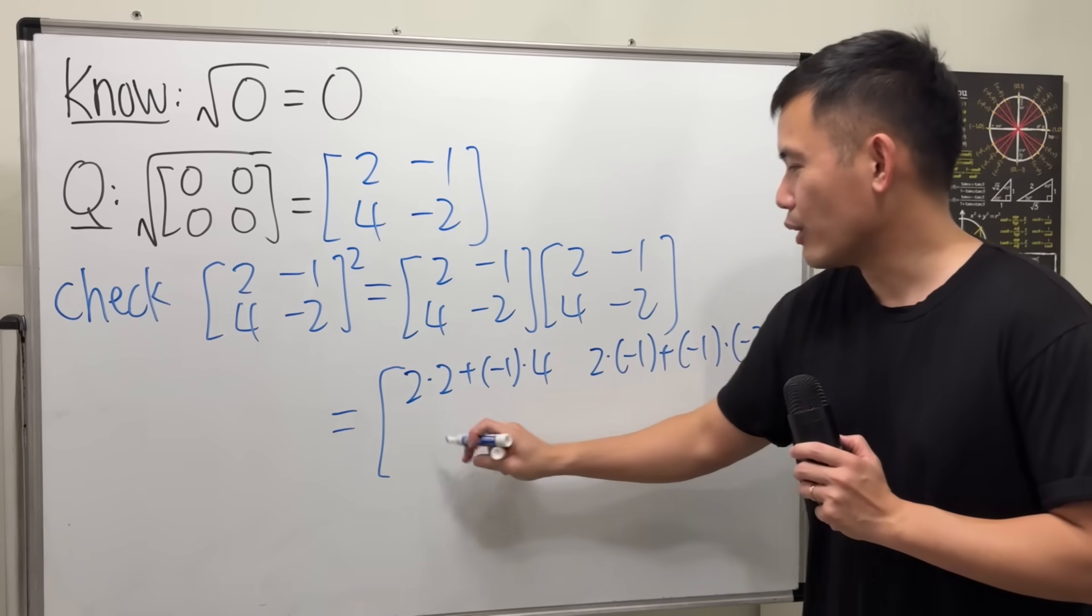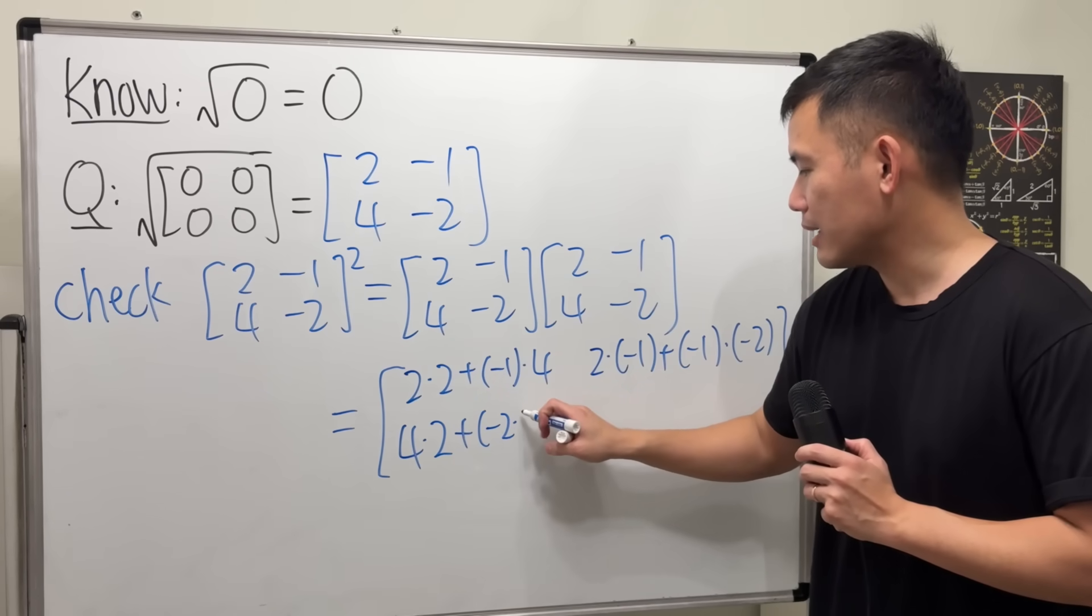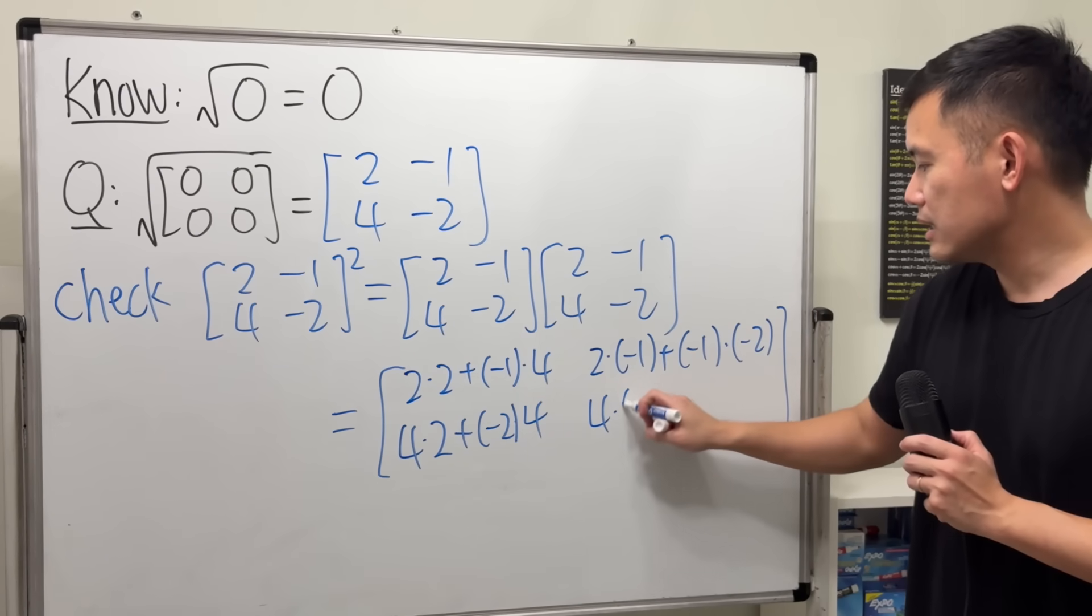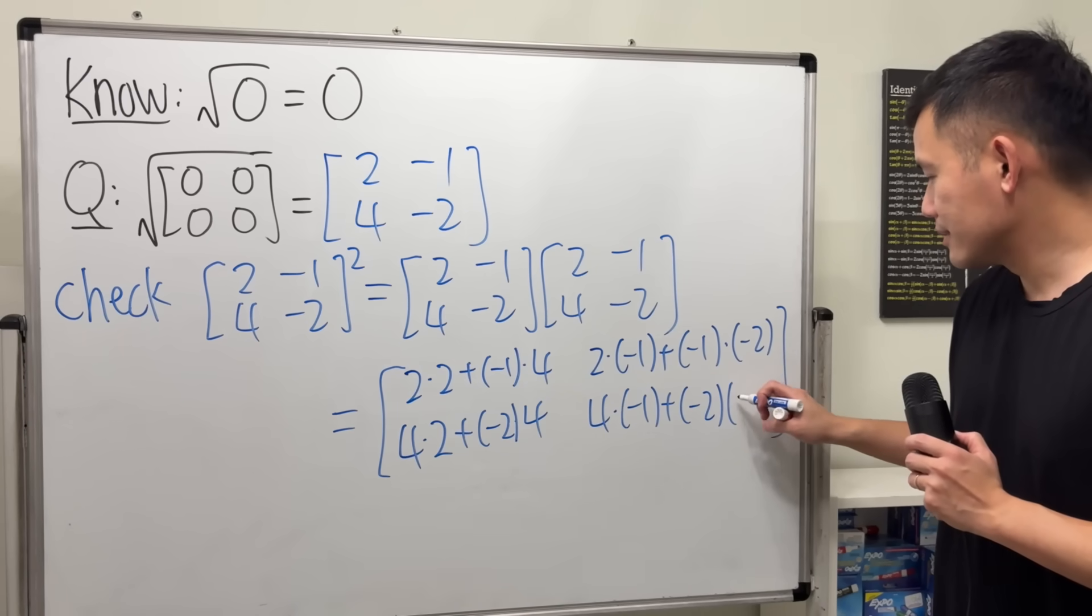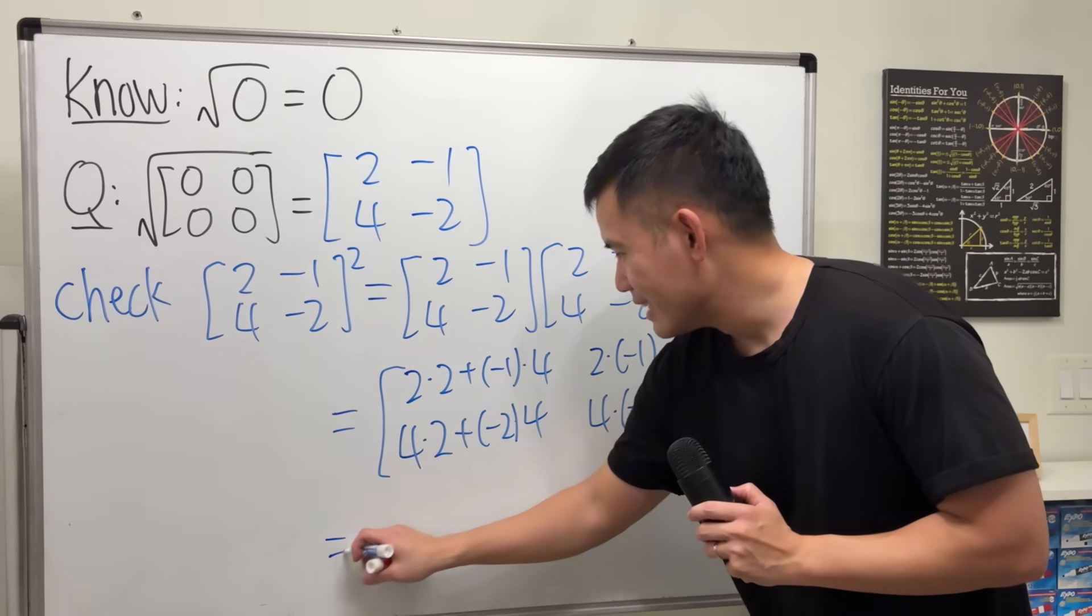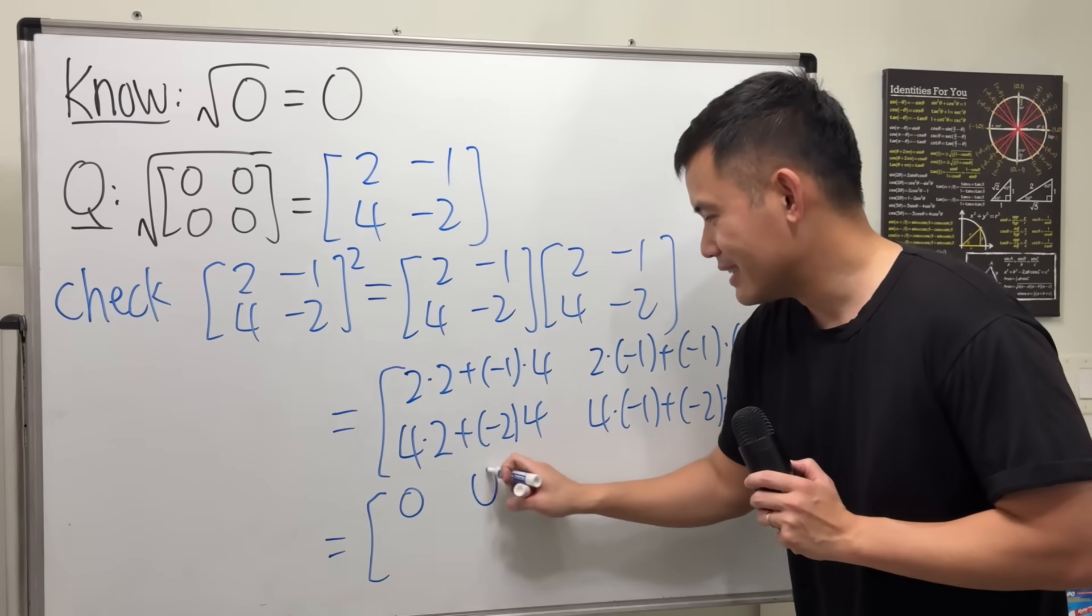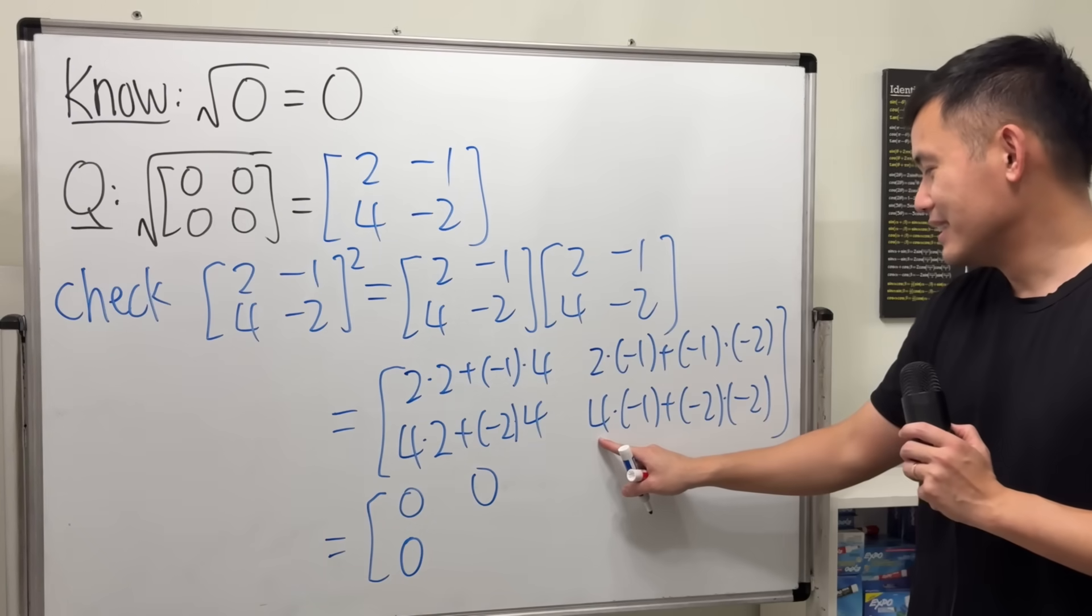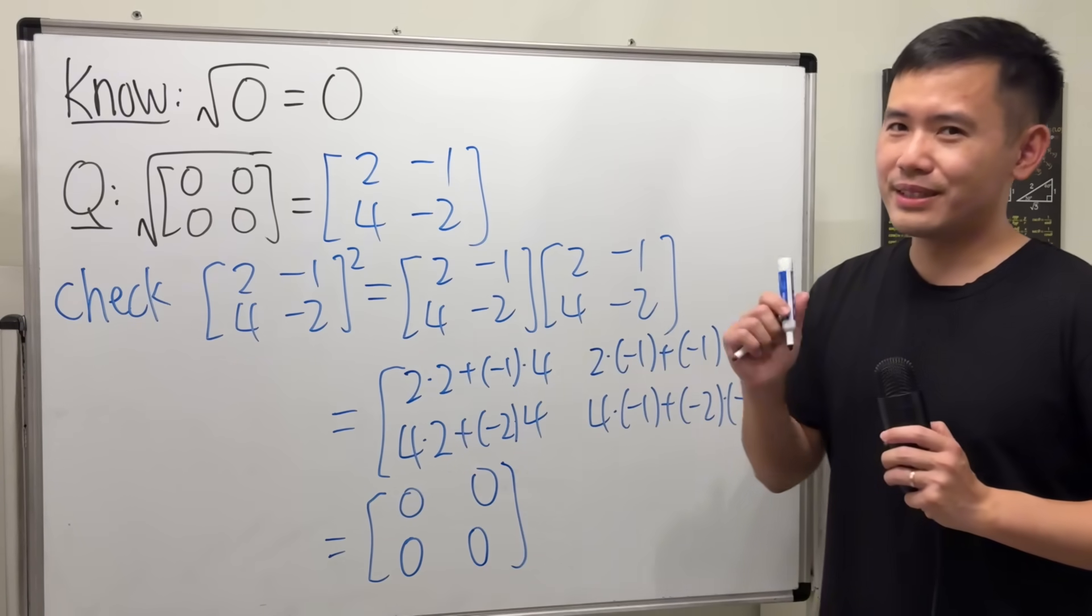So far so good, right? Because this is negative 2 and this is positive 2. And then continue. We do this dot that, so 4 times 2, plus negative 2 times 4. And then lastly, this times that, and then plus negative 2 times negative 2.